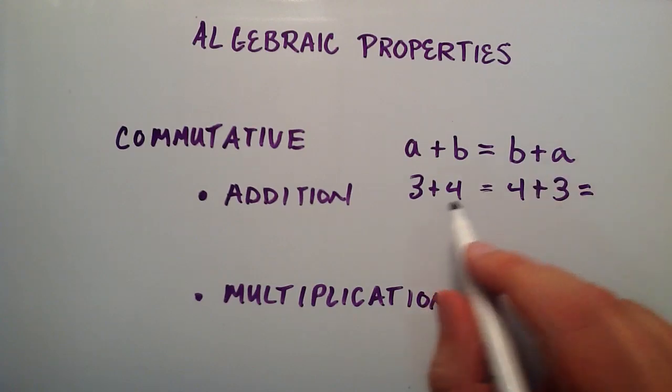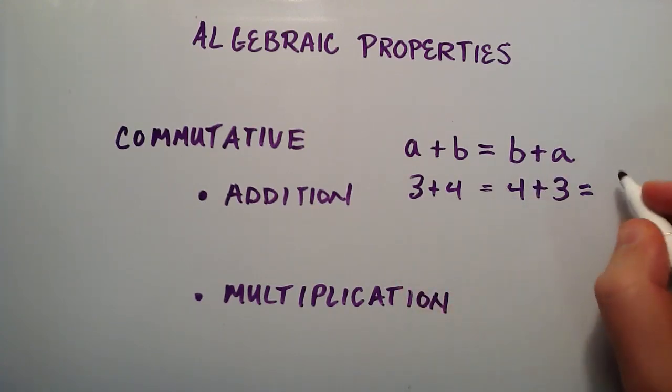3 plus 4 equals 7, and 4 plus 3 equals 7. That's the commutative property of addition.